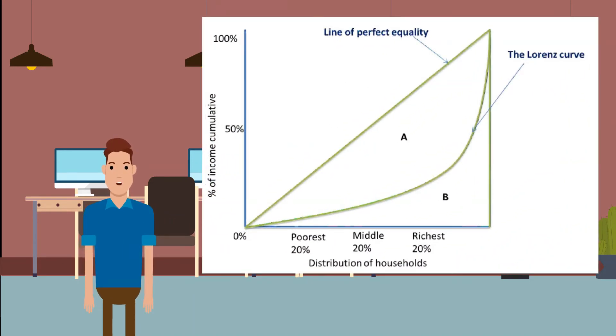This shows the cumulative percentage of the population plotted against the cumulative percentage of income that those people have. A perfectly equal society would have a straight line from corner to corner, the degree of the bend away from that straight line indicates the degree of inequality.